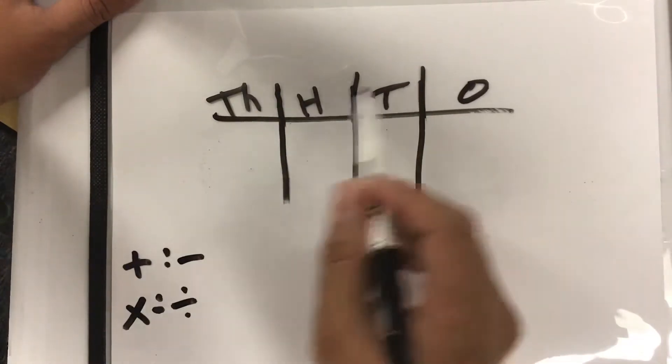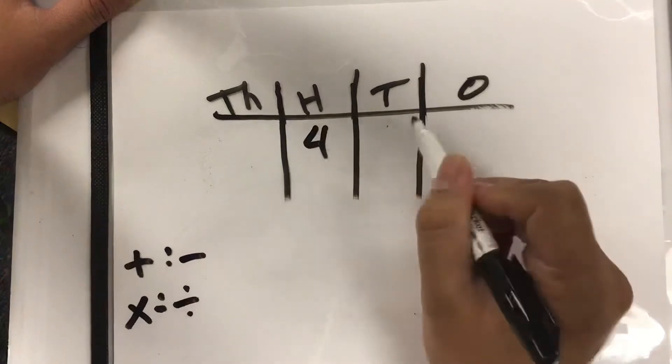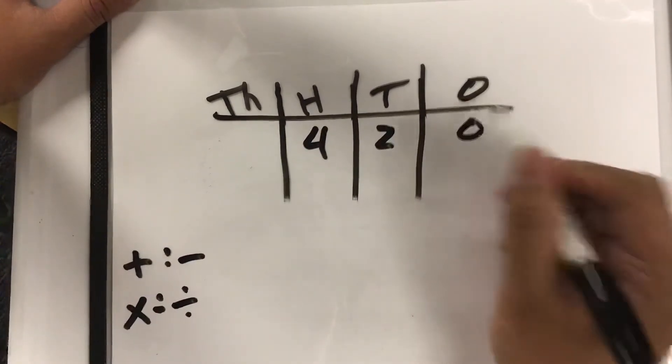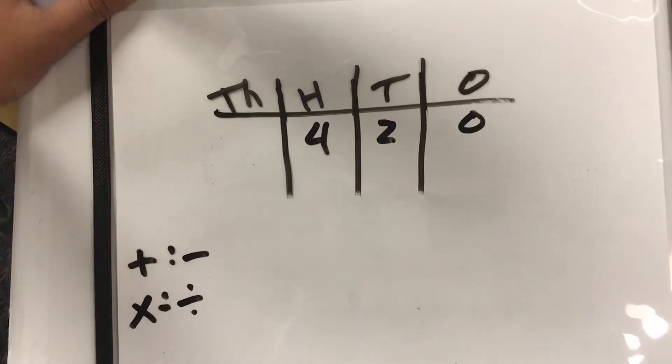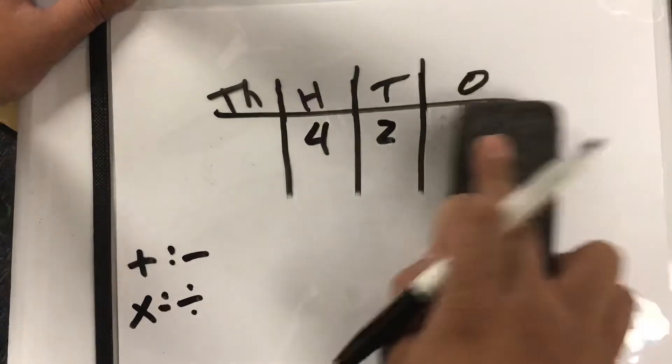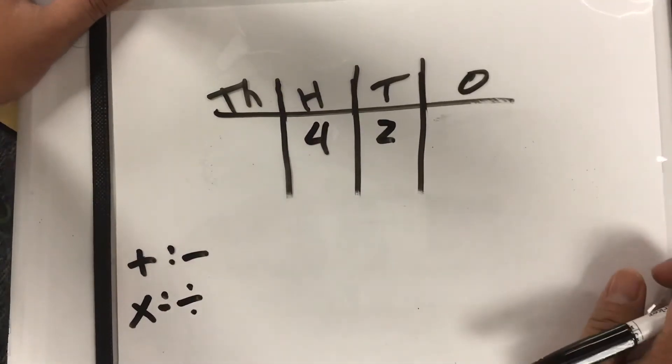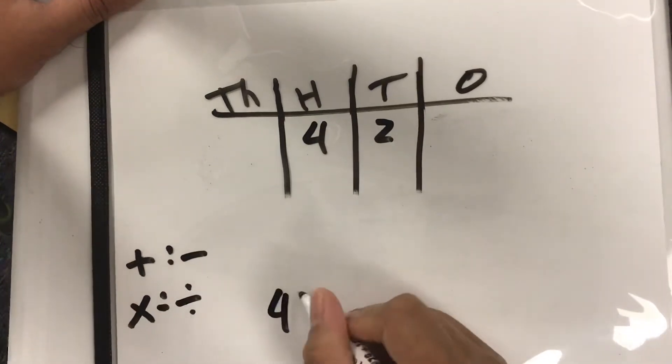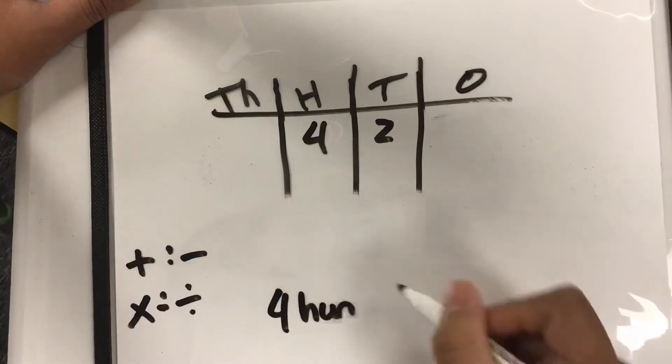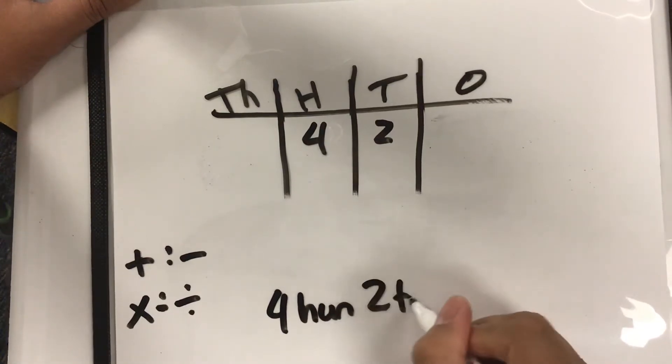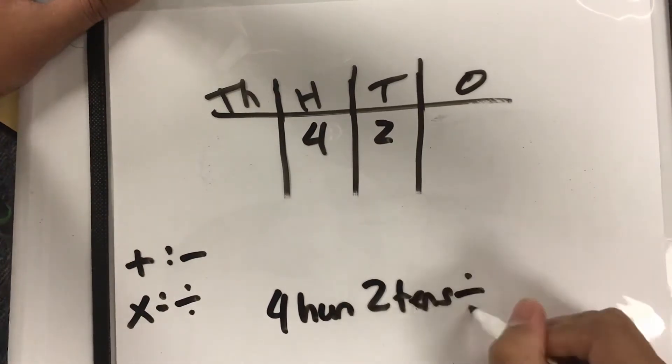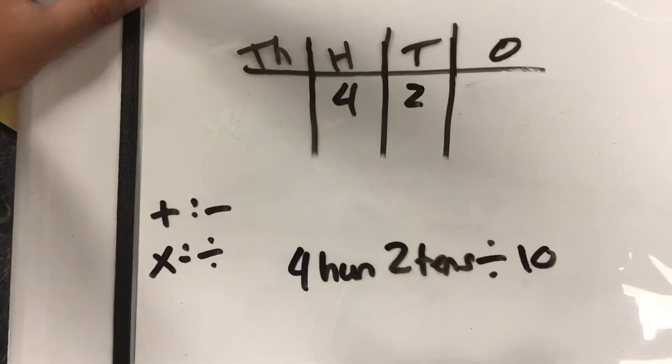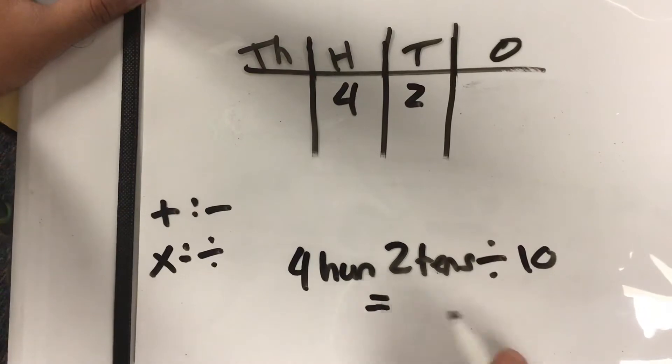When we look at our chart, let's say we have our four hundreds, two tens and zero ones. OK, well, if there's zero, we don't really need to mark zero. So if we have four hundreds and two tens and we want to say four hundreds and two tens divided by 10, what would we get there? Which way would we have to go?